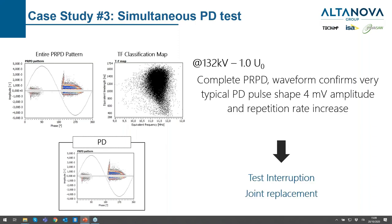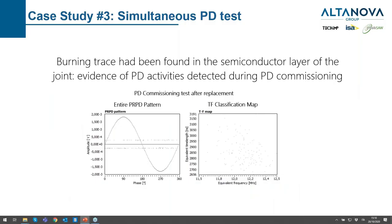As normal procedure, they tried to increase the voltage to validate it was real internal PD without causing a joint failure. By increasing to 132 kV phase-to-ground, it was possible to see the entire PD pattern — the pulse shape was slightly higher, with a peak of 4 mV. The test was interrupted, the joint was replaced. After replacement, the noise threshold was less than 1 mV and no PD signal could be seen.